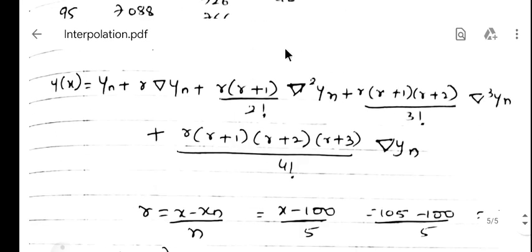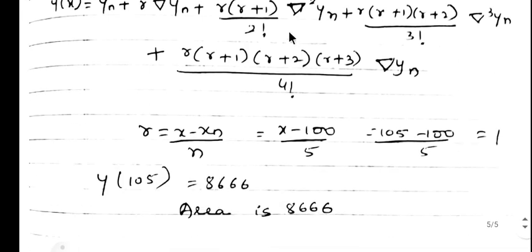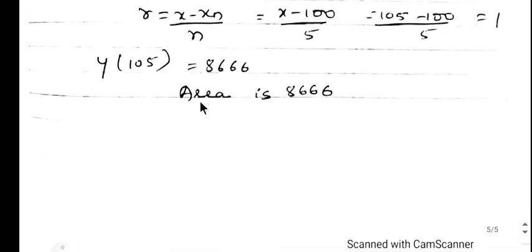To summarize: based on the given value of x, decide whether to apply forward or backward interpolation. If x is in the first half, use forward; if in the second half, use backward. Then form the difference table, substitute all values into the formula, and calculate the answer. Thank you.